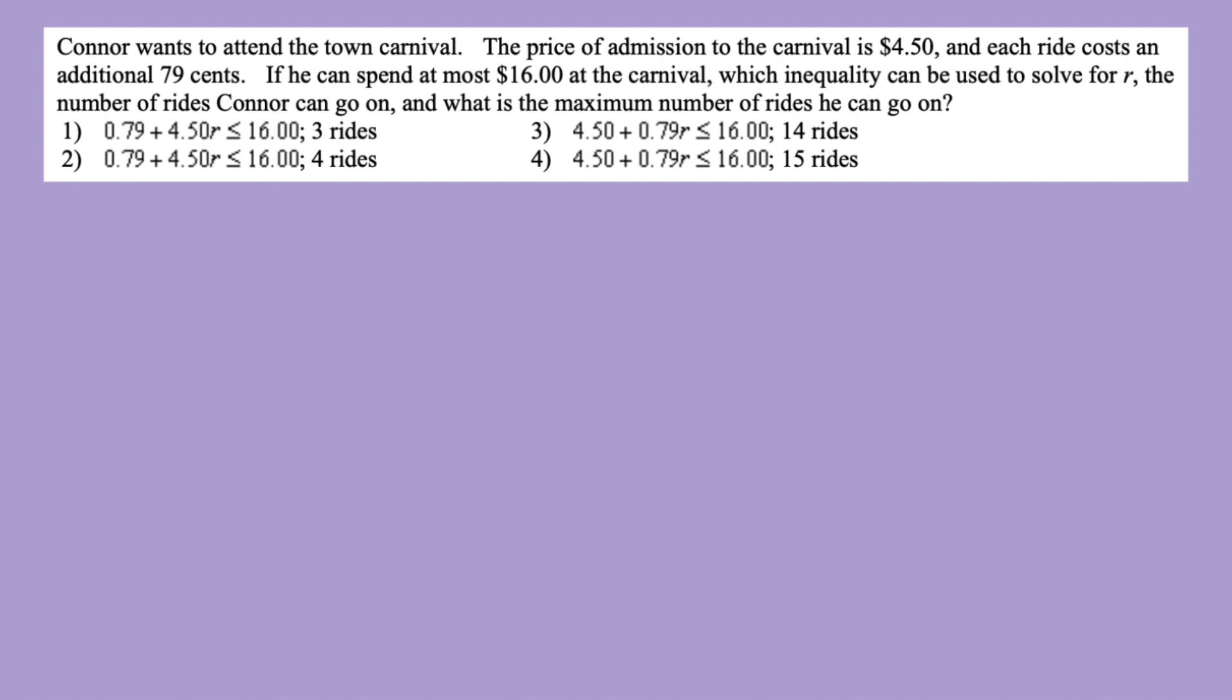So this would be $0.79 times R, and we're doing it as $0.79, because this is cents, and this is dollars. When they're asking for money units, we have to keep the units intact. So once we write this down, we have $4.50, which is our fee. It has to be paid. It's a constant, and then $0.79R, which we just discussed, is less than or equal to $16, which is the max amount that he can bring.